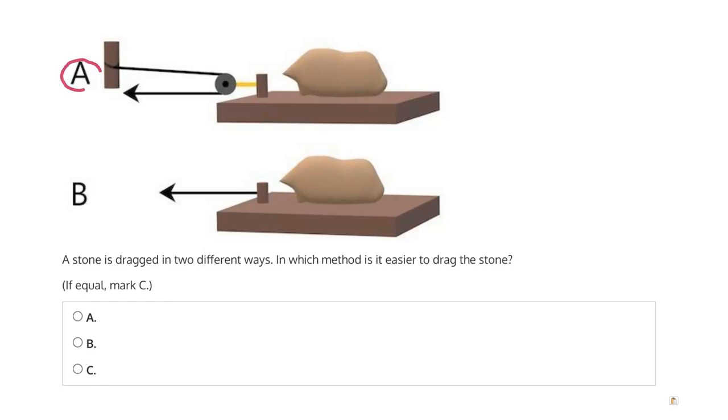Method A employs a pulley. The effect of the pulley will be to split the tension in the string across two different strings instead of one, as we see in B.